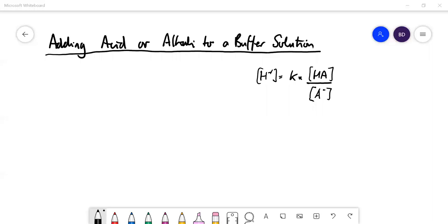The whole point of a buffer solution is that it resists changes when you add small amounts of acid or alkali. What we're going to do in this video is work out how much the pH will change when you add a certain small amount of acid or alkali.